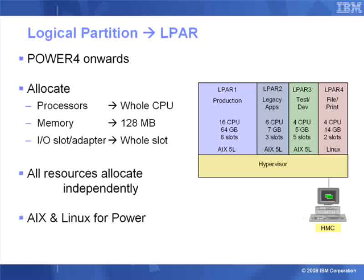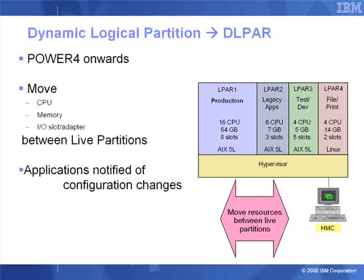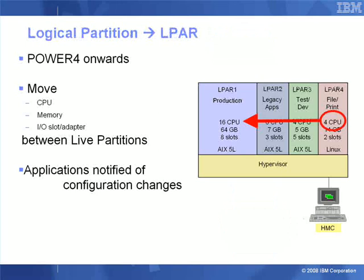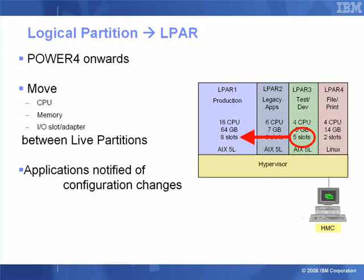Slightly later we introduced dynamic logical partitions — the moving of resources between logical partitions while they are actually running, so we don't have any outage when we want to make a change. This actually happens very rapidly: for CPUs it's just a couple of seconds; for memory it takes a little bit longer if we have to take the memory out of a running logical partition, as we have to give it time to page out that memory. For example, perhaps our production machine is going through a large peak in workload, so we could move two CPUs from logical partition 4 to it, maybe a couple of gigabytes of memory from logical partition 2, and a couple of ethernet adapters from logical partition 3 — bring those online into logical partition 1, let it work through the peak and then move them back.